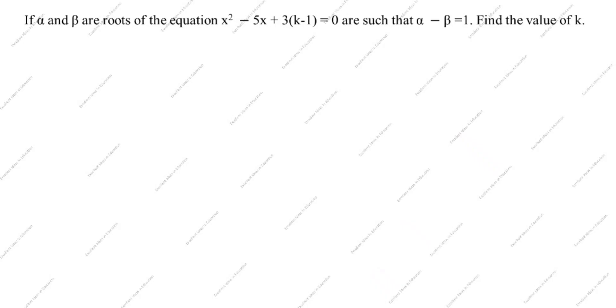Hi friends, welcome to my channel Excellent Ideas in Education. Today we are going to solve this polynomial problem. If alpha and beta are zeros of the equation x² - 5x + 3(k-1) = 0 such that alpha minus beta equals 1, find the value of k.